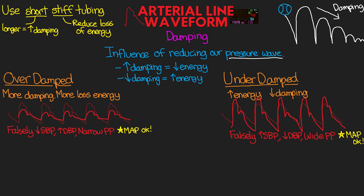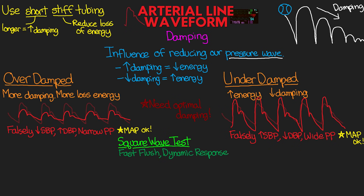That was a lot to unpack with damping — it's definitely not something we normally think about in critical care, but it definitely will have an effect on our A-line and its accuracy. That leads right into something called the square wave test. Now that we know our pressure tracing can be inaccurate due to damping, what we need is what we refer to as optimal damping of our waveform. Knowing this waveform is accurate is imperative, as some treatment options will depend on the accuracy of these numbers. Fortunately, we have a very easy test to check the dampening of our system — the square wave test. You may also hear it referred to as the fast flush or the dynamic response test, but they are all the same thing.